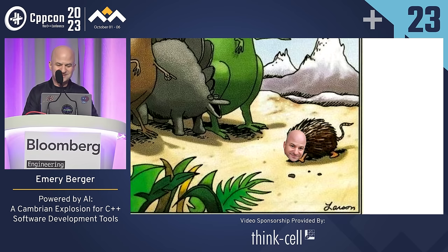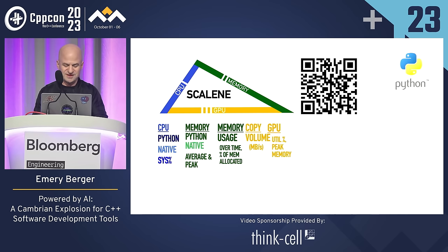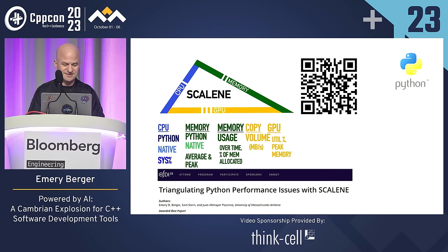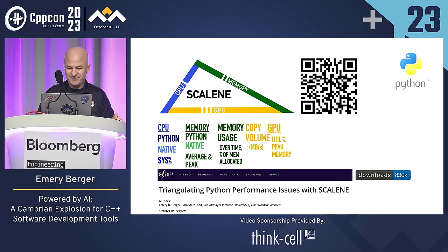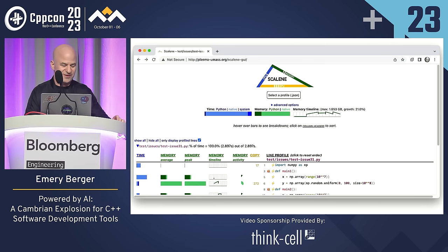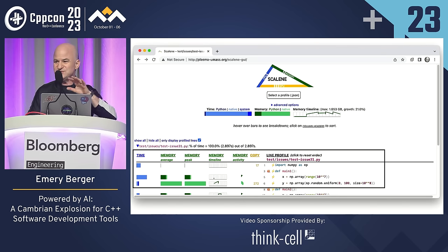I'm going to briefly talk about some work we've done in another context and then bring it back to C++. Our group has produced a widely used profiler for Python called Scalene. We just presented it at OSDI in Boston, where it won the best paper award, which was very nice. It's been downloaded more than 800,000 times. It's a cool profiler — it does lots of interesting stuff. This is output from Scalene: it shows you at a high level what's going on in your program in terms of time and memory consumption over time.